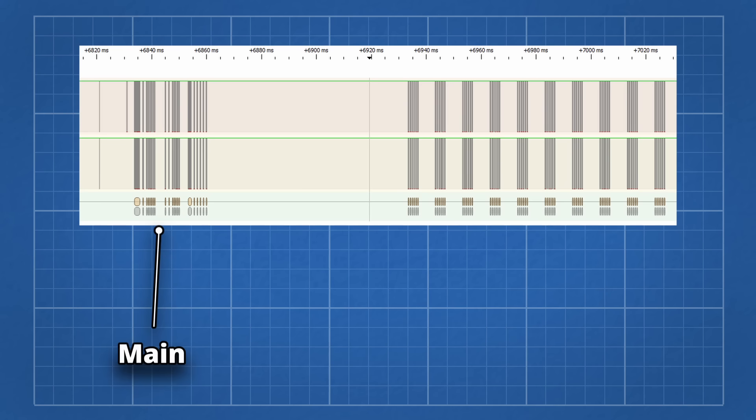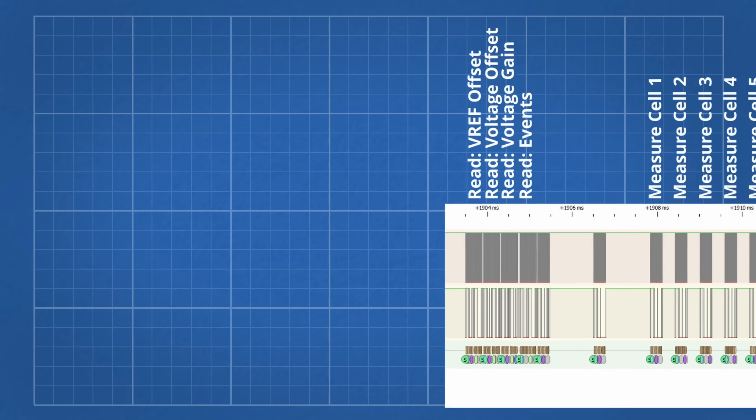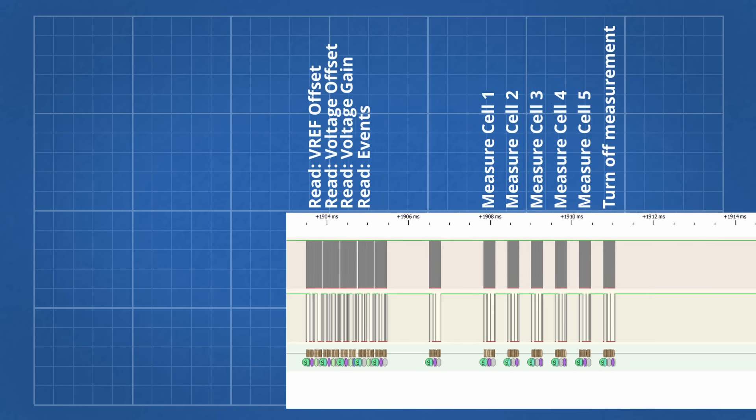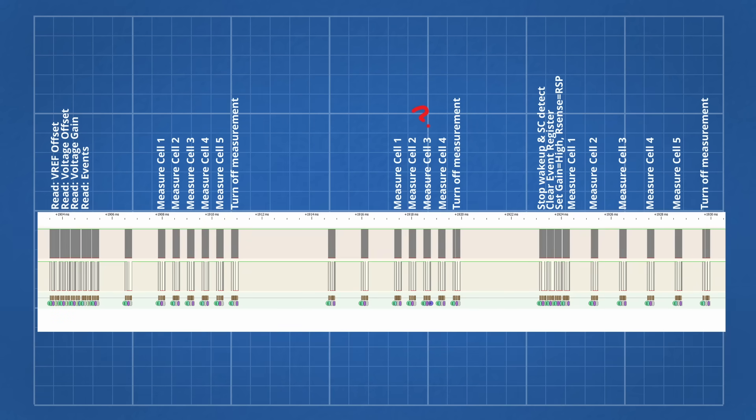For charging, it does the main sequence once, then measures cells 1-5 over and over. Looking closely at the main sequence is where things get a bit weird. It starts well by reading some voltage offsets, gains, and the event register, and then it measures cells 1-5. But then they measure the cells again, but this time only cells 1-4. Then it writes settings, gains, and clears the event register, which really should have been done at the start. And then it goes and measures the cells for a third time, but at least measures all 5 this time.